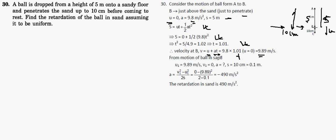For motion of ball in sand, the final velocity from air becomes the initial velocity in the sand, and finally it comes to rest, so final velocity is 0. Distance traveled is 10 centimeters, which is 0.1 meters. We'll find the retardation using the formula v² - u² = 2as.